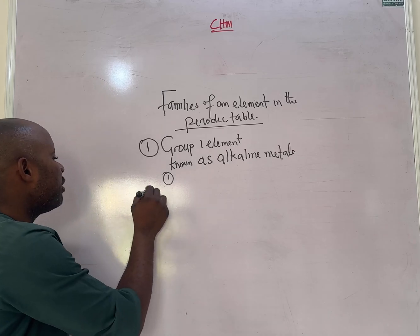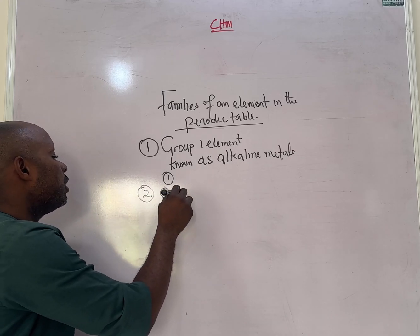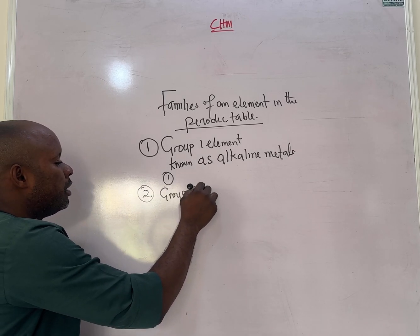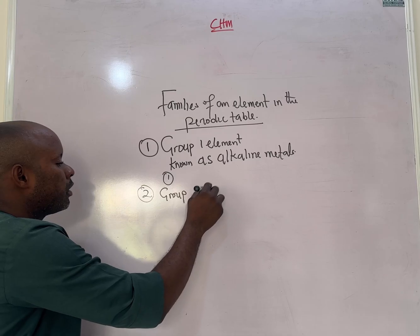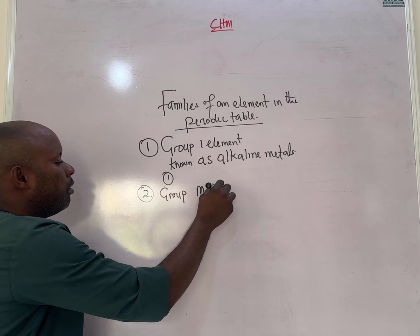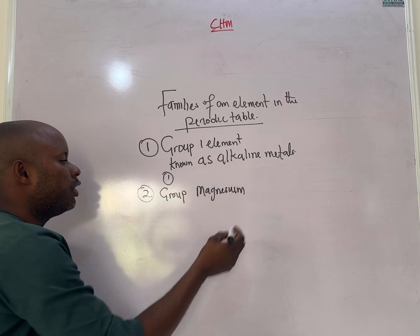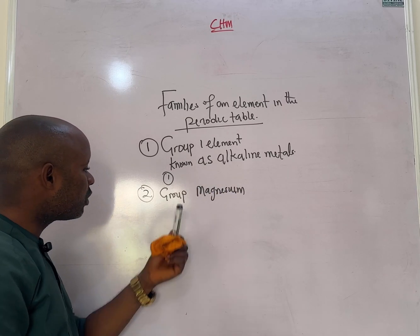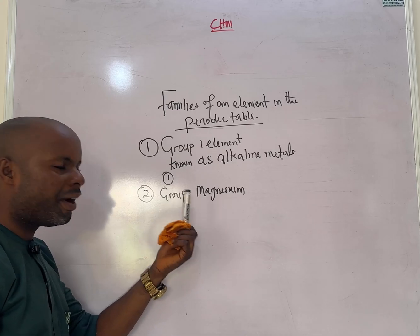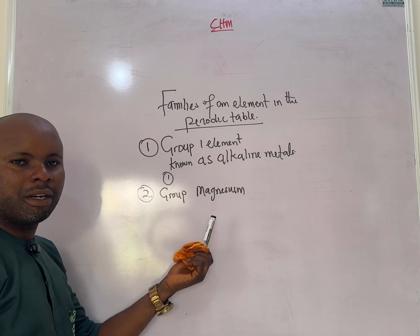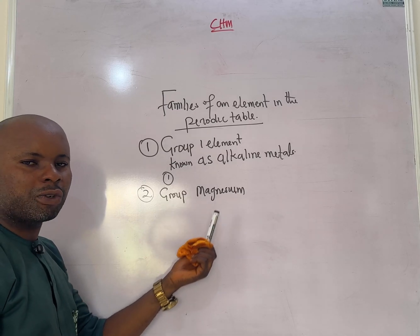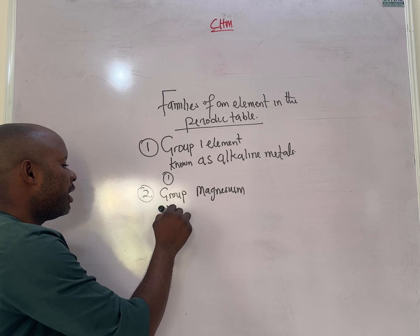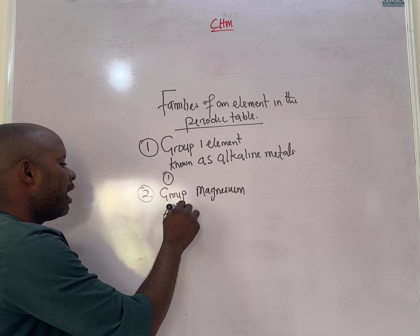Group two elements — examples include magnesium and calcium — are reactive but not as reactive as group one elements. They are known as the alkaline earth metals.